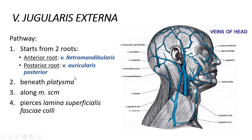The vena jugularis externa is formed by two roots: the anterior root belongs to the vena retromandibularis and the posterior root belongs to the vena auricularis posterior. They unite at the level of the angulus mandibulae, and the start point also localizes at the upper margin of the musculus sternocleidomastoideus.